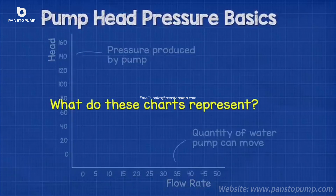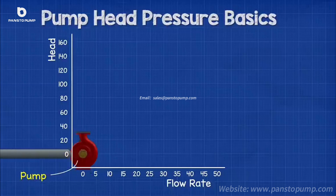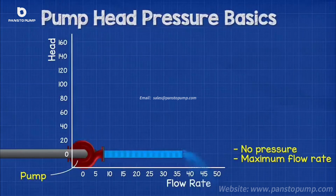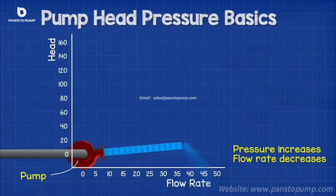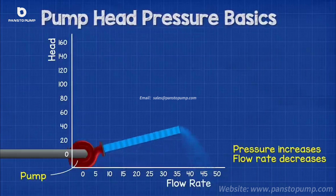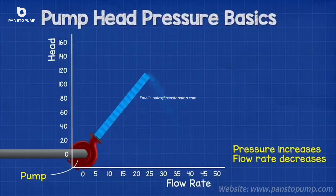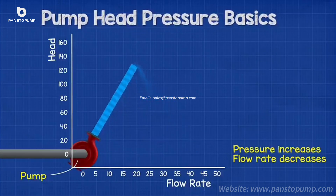So what do these charts represent? If we turn the pump sideways and connect it to a pipe, the pump is pushing the liquid horizontally so there is no pressure, but the water is flowing at its maximum flow rate. As we slowly rotate the pump towards the vertical position, we see the flow rate decreases but the pressure increases.